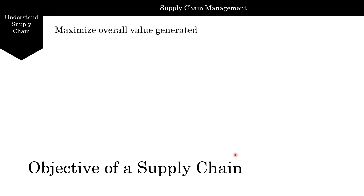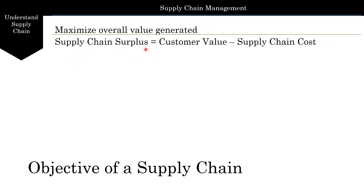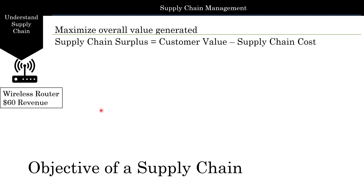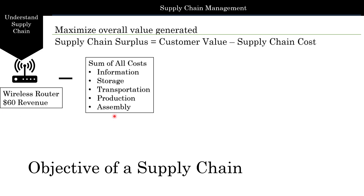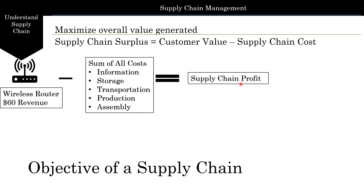So the objectives of the supply chain — what do you want from a supply chain? We are looking to maximize the total value generated. Supply chain surplus is essentially the value the customer gets minus the cost to the supply chain. So a wireless router at $60 minus the sum of all the costs — cost of information, storage, transportation, production, and assembly — gives you the supply chain profit.